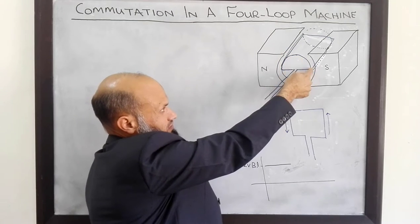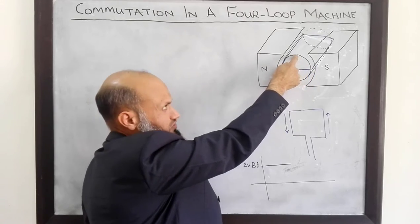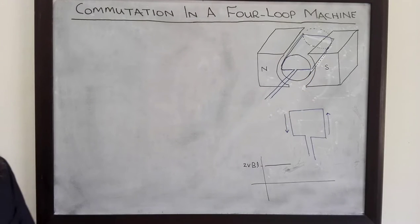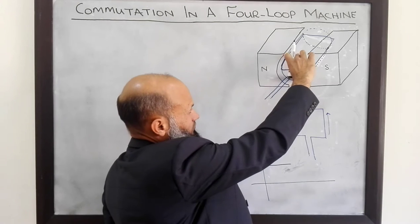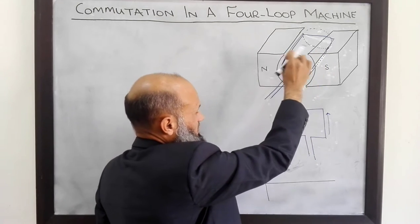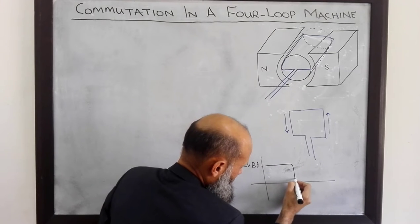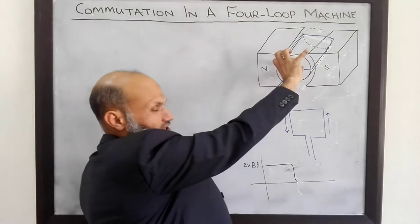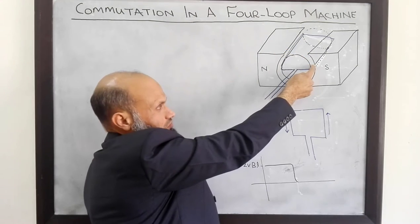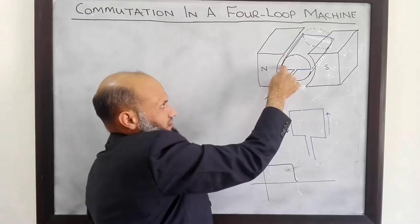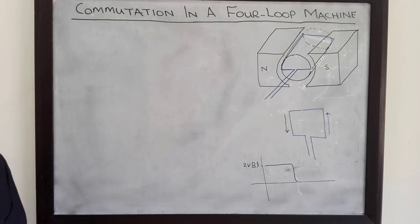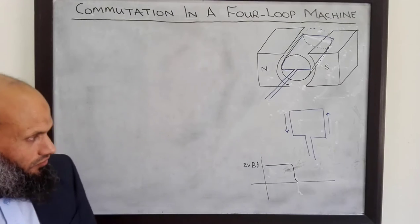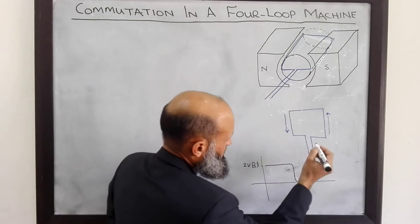After a while, these conductors — this side and this side — will have moved to a position where the flux density is zero, so no voltage will be induced. After a certain time, this coil would have rotated so that this side of the coil is now under one pole face and this side is under the other pole face. Hence, voltage will again be induced in these two sides of the coil.